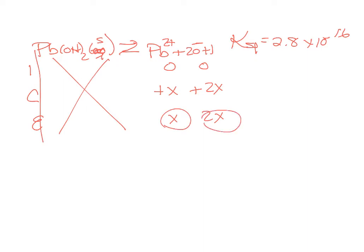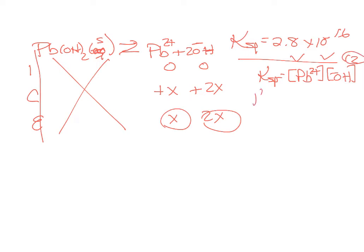Once you have the equilibrium values, plug those into KSP. It's really important to write the generic form of KSP before you plug in the X values, because if you go straight to the X values so many people forget the exponent. It ends up being our very common 4X cubed. In this case we were given KSP: it's 2.8 times 10 to the minus 16.